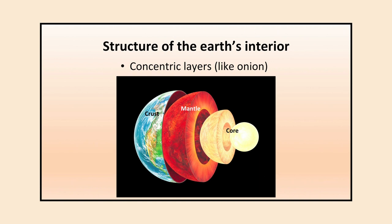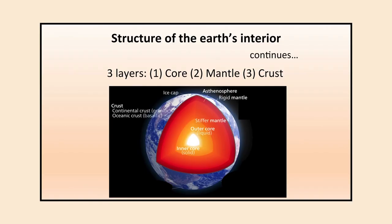The Earth has different layers in concentric ring form: core, mantle, and crust. There are three layers: the core is the innermost layer, the mantle is the layer above the core, and the crust is the outermost layer where we all live. So from inside to outside it is core, mantle, and then crust.